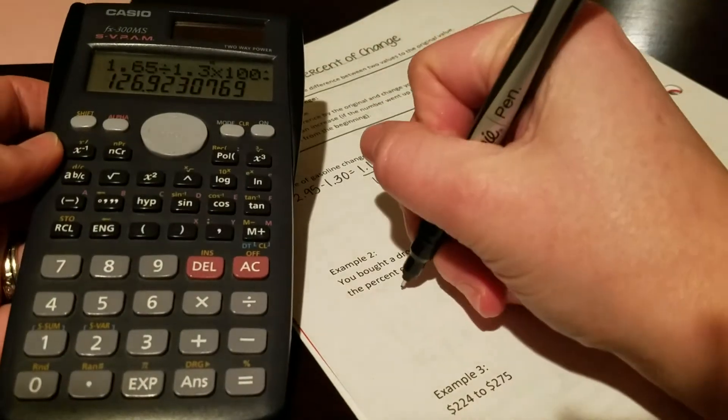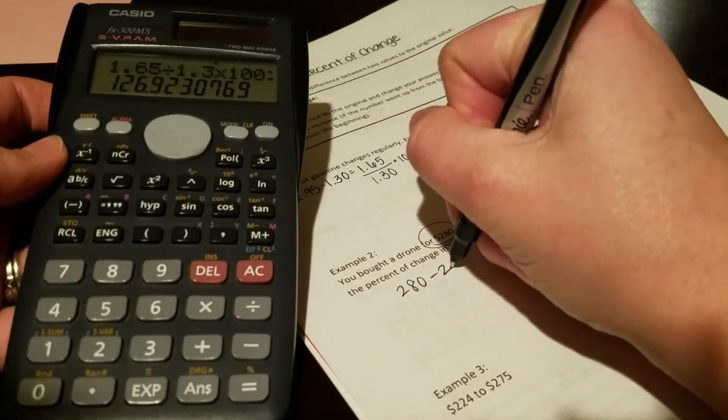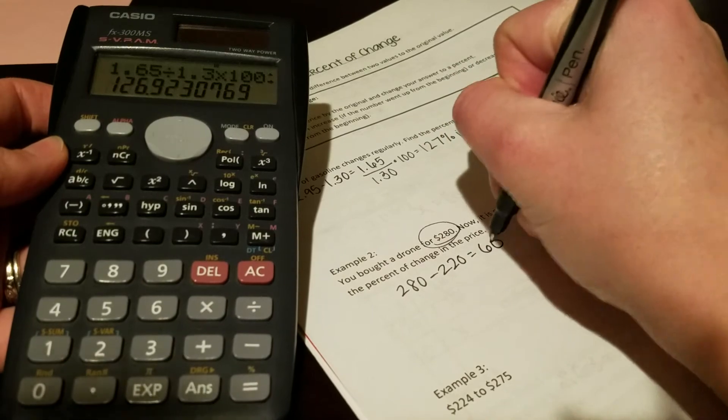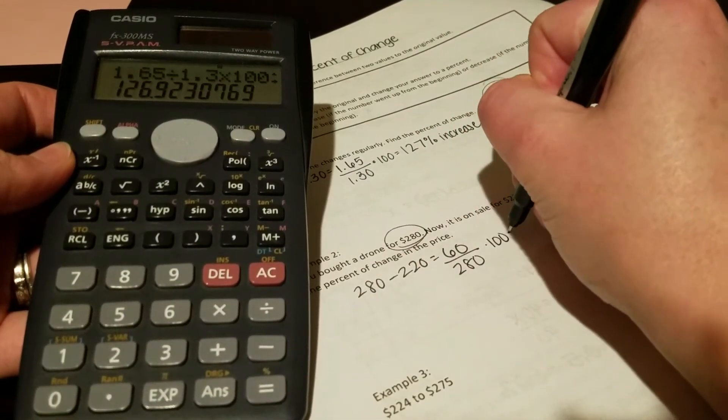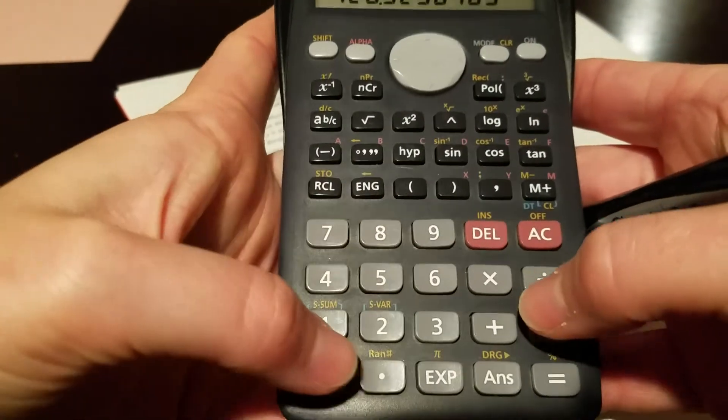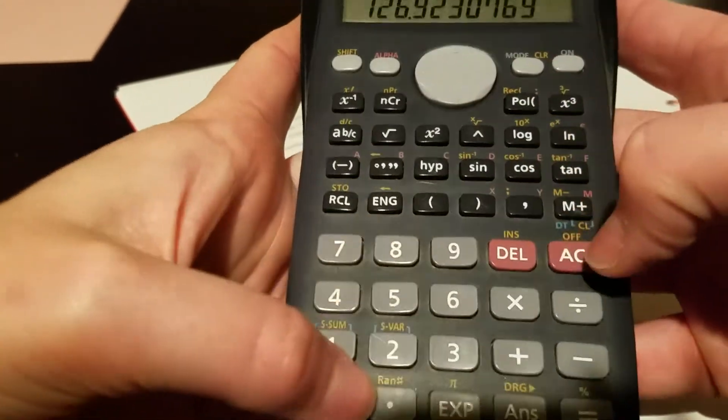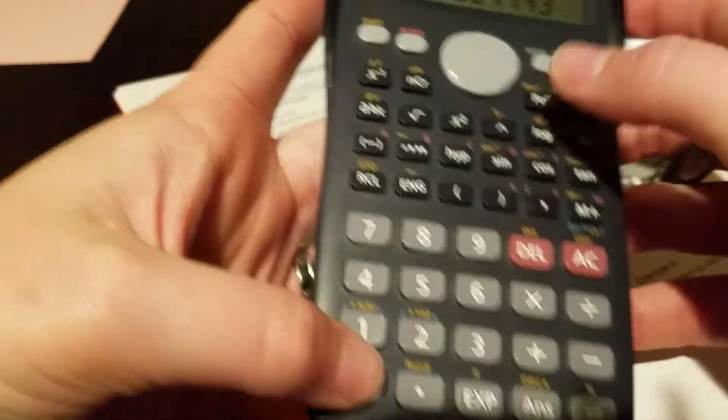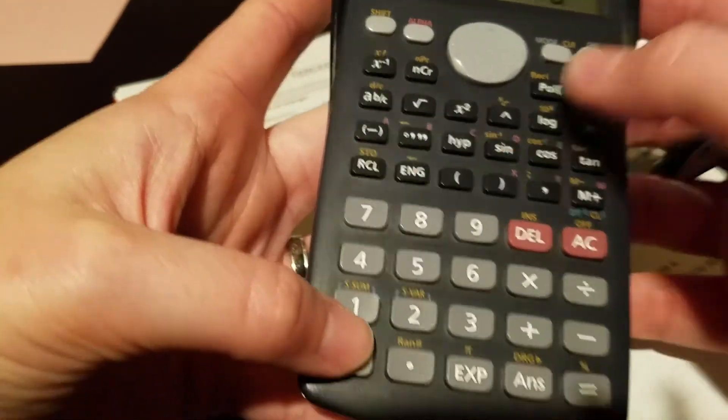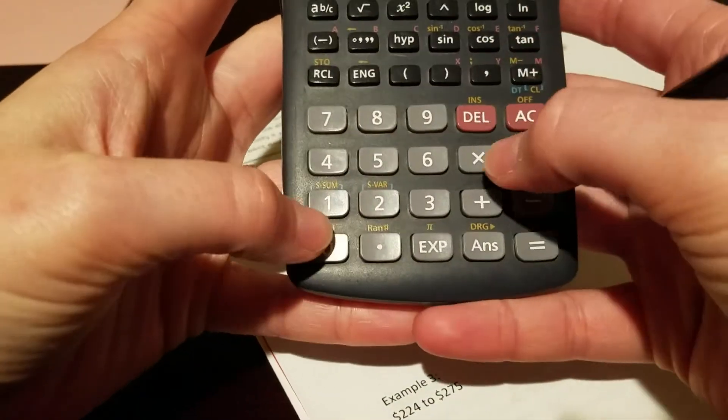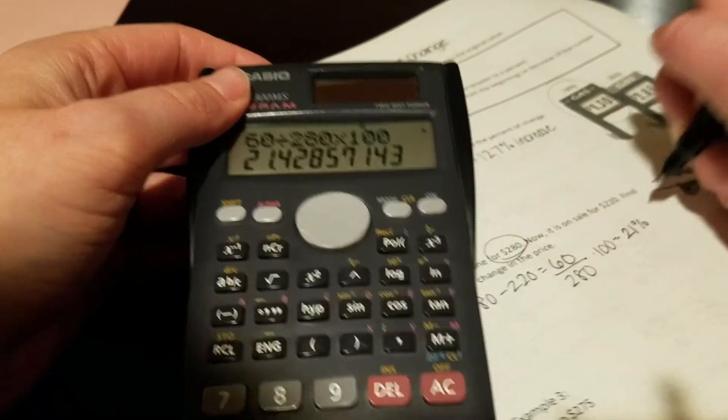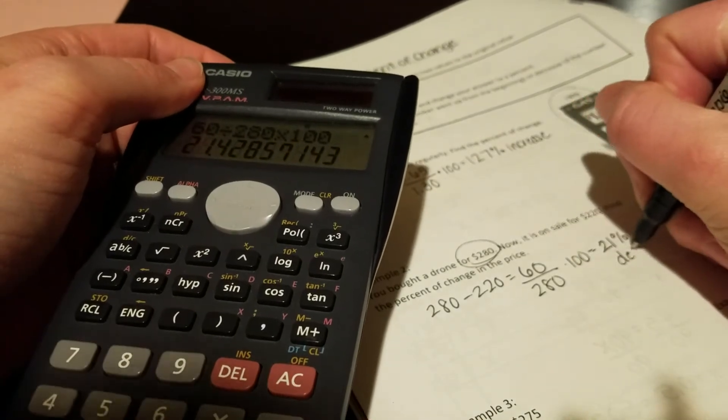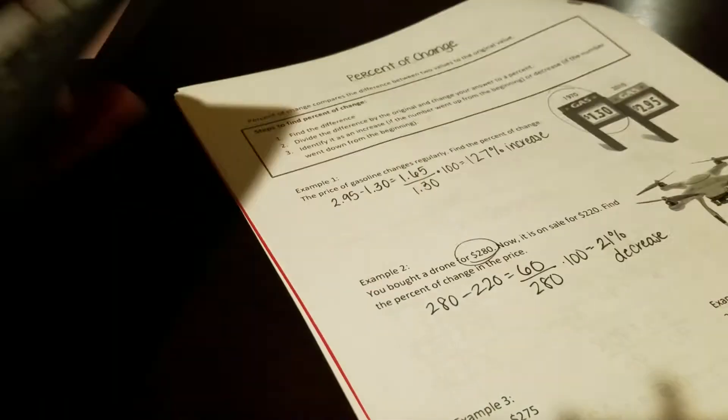So step one is to do a subtraction problem. 280 is larger minus the 220, which gives you a $60 difference. Divide by your original, which is 280, and multiply by 100. We get 21.4, which would just round to 21%. And the price went down, so this is what we would call a decrease.